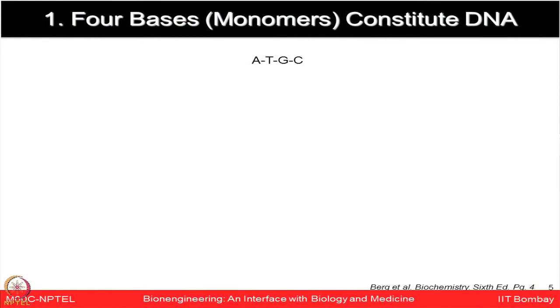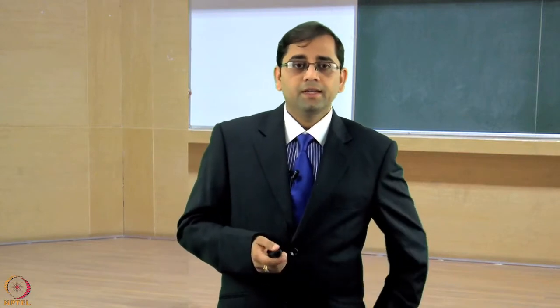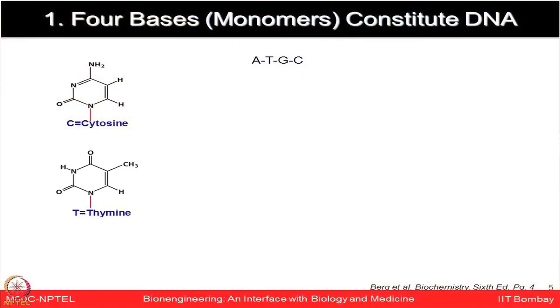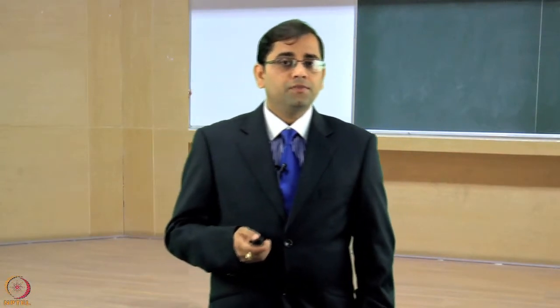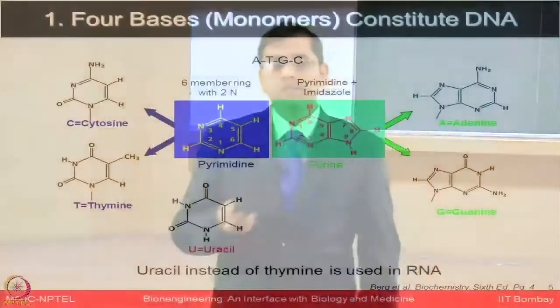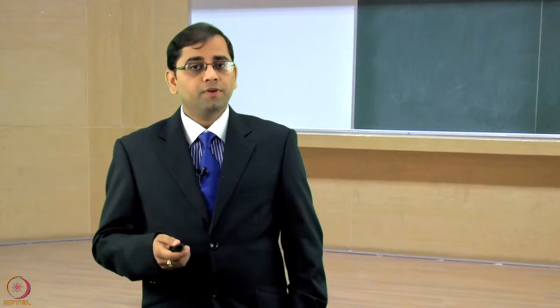Let me refresh you about the DNA structure and the components involved in making it. There are 4 bases — the monomers which constitute DNA: cytosine, thymine, adenine, and guanine (ATGC). Cytosine and thymine are 6-membered rings with 2 nitrogen atoms, having the pyrimidine ring structure. Adenine and guanine share the purine ring structure, which is pyrimidine plus an imidazole ring.